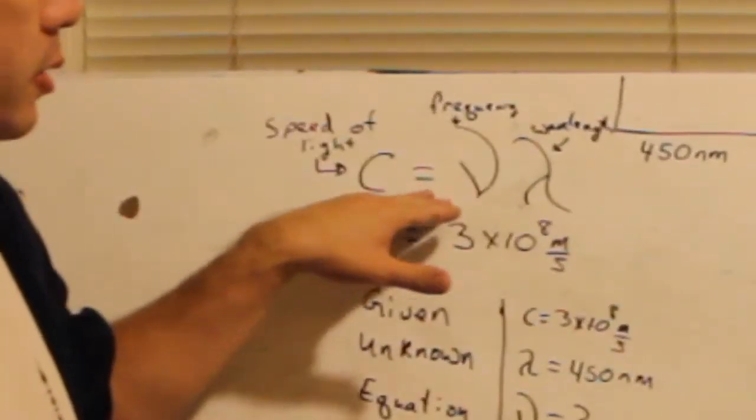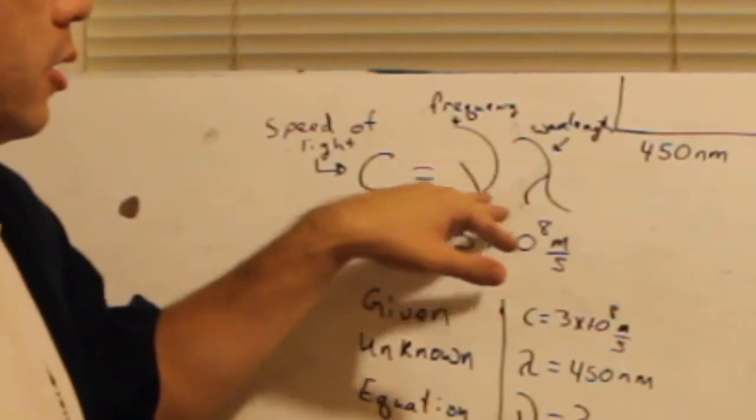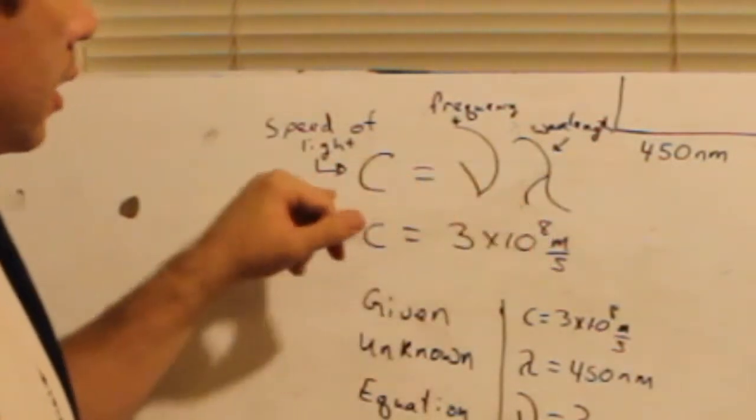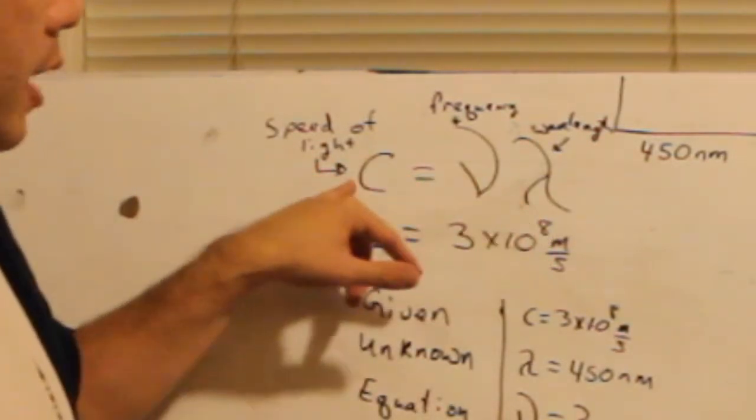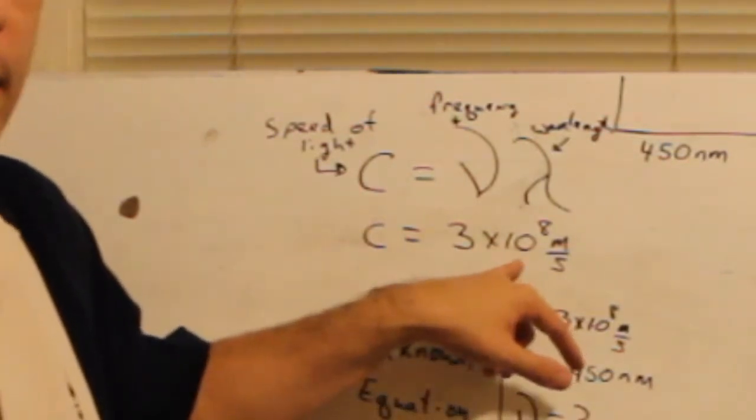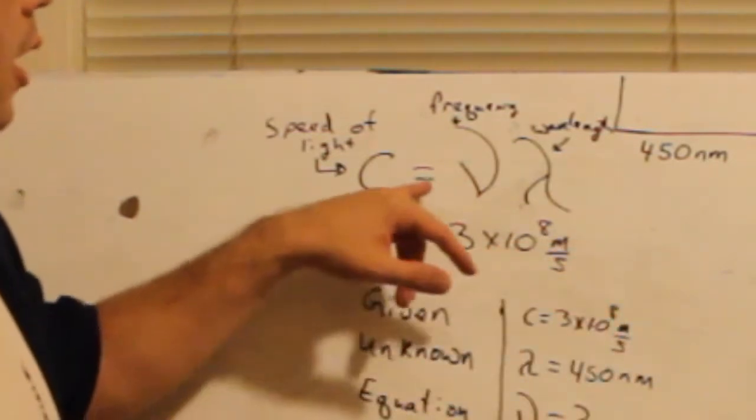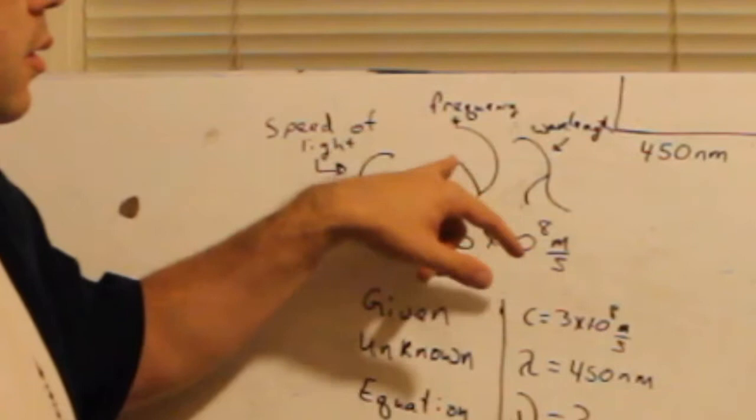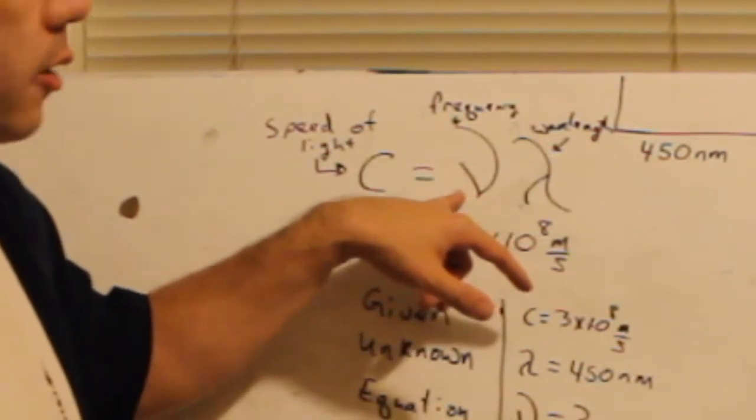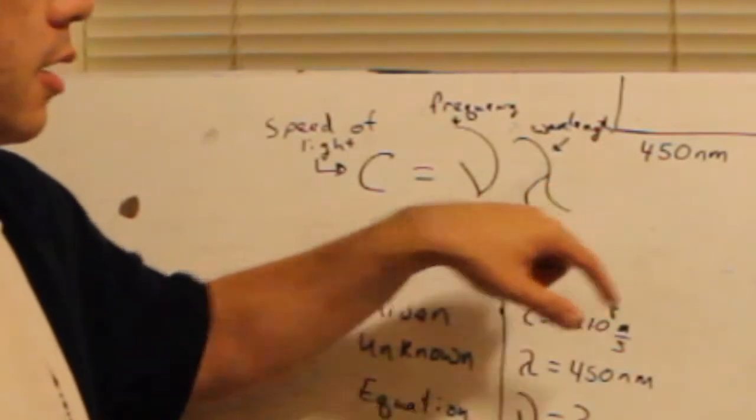C equals frequency times wavelength. C equals nu times lambda. So, C is the speed of light, and the speed of light is always 3 times 10 to the 8th meters per second. Always, always, always. Frequency, measured in hertz, is here, and wavelength, measured in meters, is here.